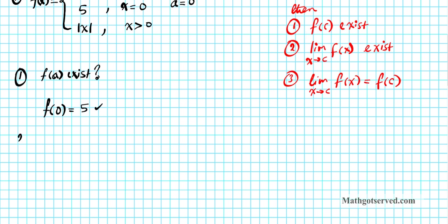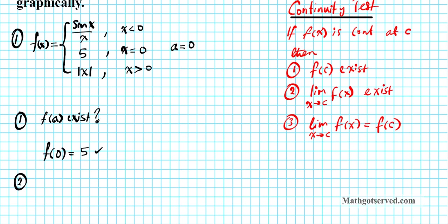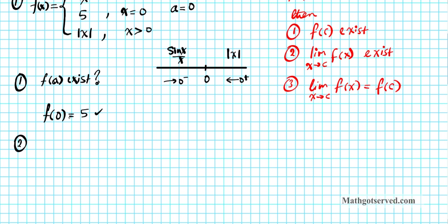Now for the second test: does the limit exist? Since we have two different functions on both sides of a = 0, we approach from the left first and then from the right. We use a number line: to the left of 0, the active function is sin(x)/x; approaching from the right, we use |x|. The question is: do these two limits approach the same value? If they do, the limit exists.